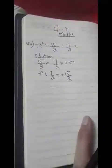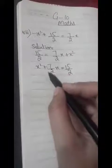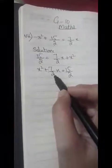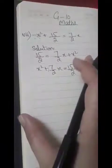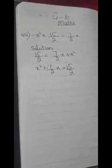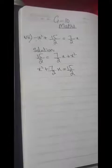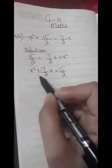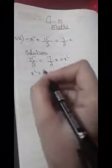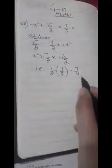To complete the square, we take the coefficient of x, which is 7/2, multiply by 1/2, and get 7/4. We need to square this value, which is (7/4)².